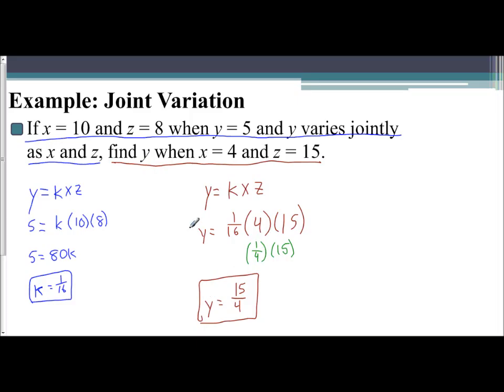So we see the general setup for all variations are the same. Our first part is giving us the information we can use to find our constant of variation. It's the only variable we do not know. And then we apply that constant to the values given to us to solve for the unknown variable.